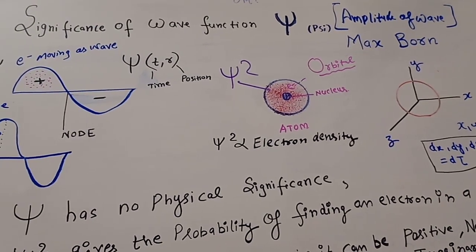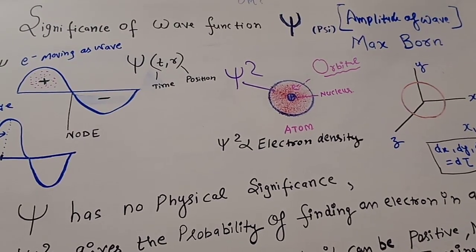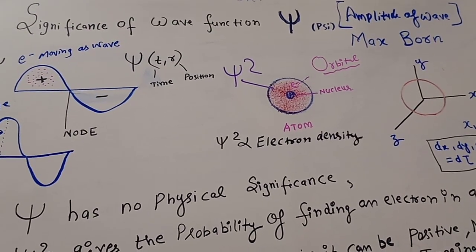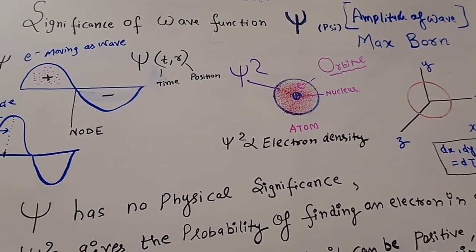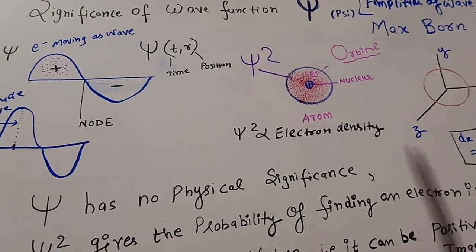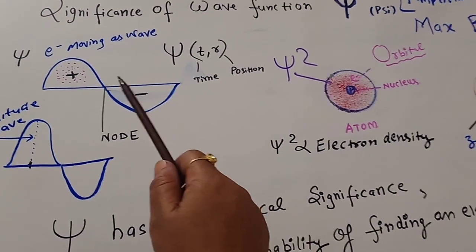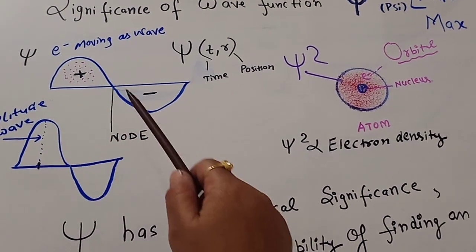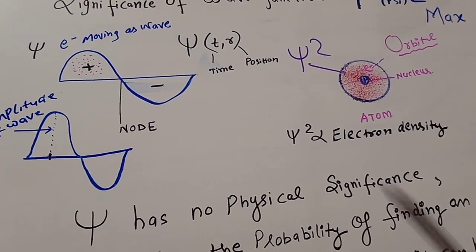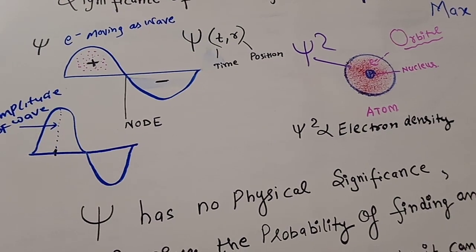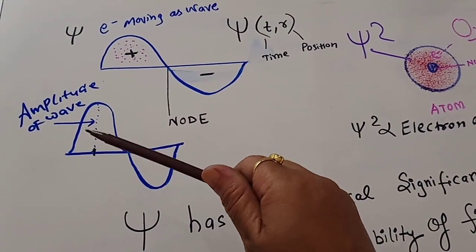As we already talked about the Schrödinger wave equation, in the Schrödinger equation we have considered that an electron is moving as a wave, and in that wave we know that each wave has its own characteristics. So, what is the amplitude of the wave?